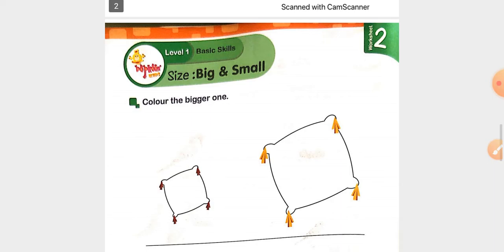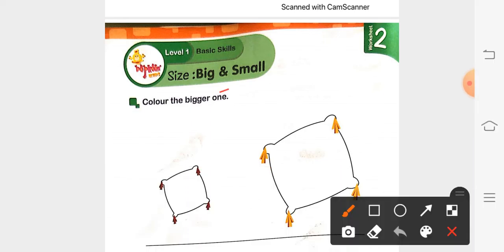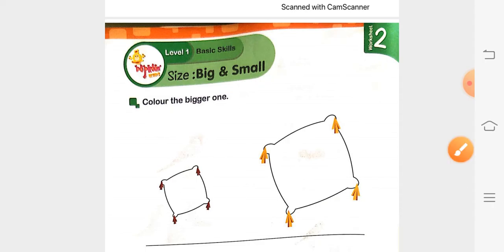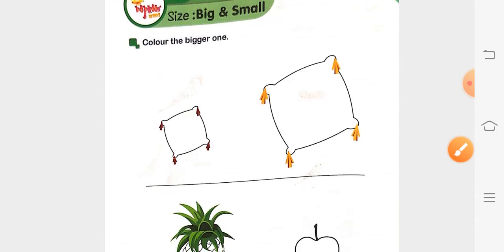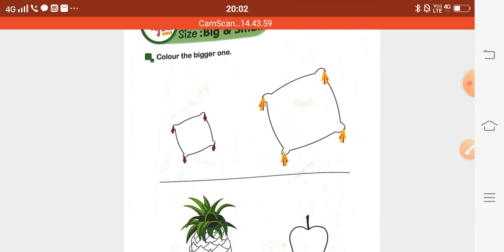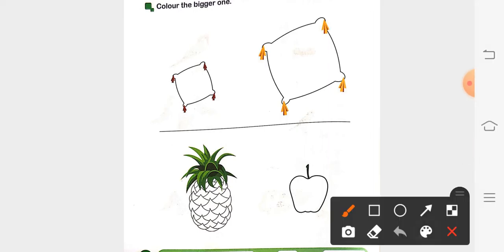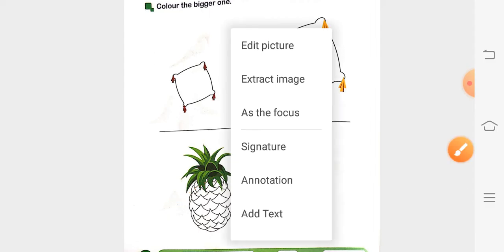Then come to your worksheet two. So what are we going to learn here? We are going to learn size big and small. That is color the bigger one. So let us see how we will color.